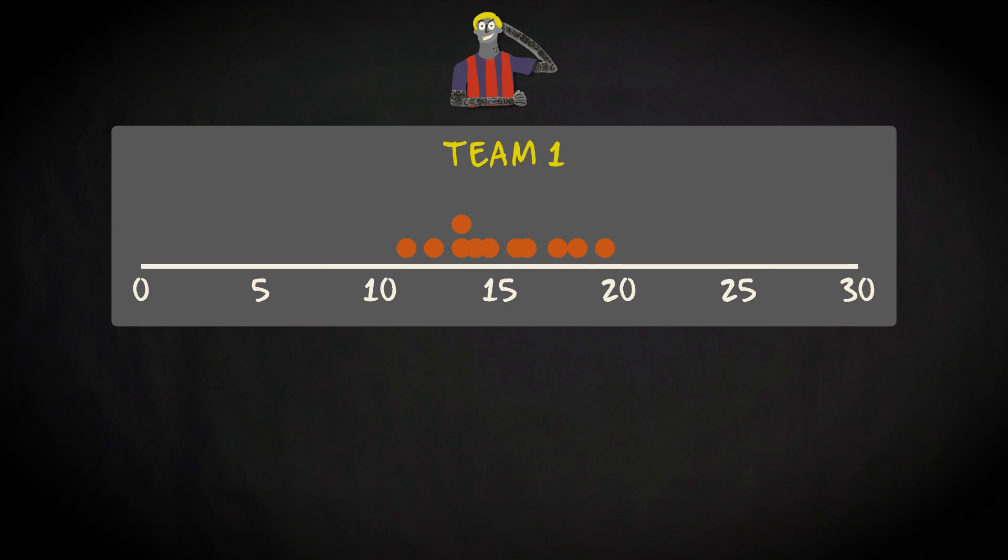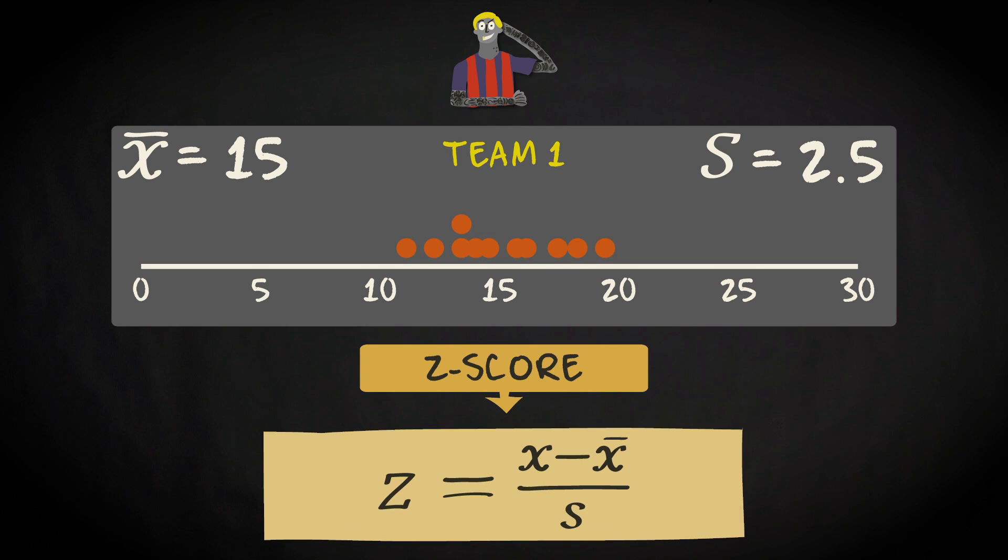Let's first take a look at the distribution of team 1. The mean is 15, and the standard deviation is 2.5. To compute z-scores, we use this formula.